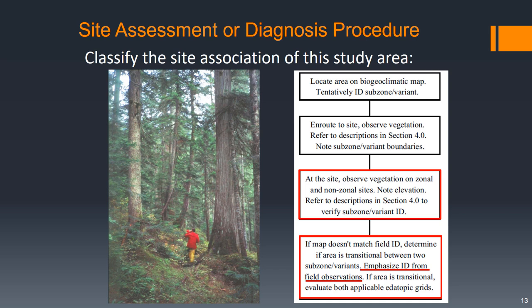If it doesn't match what we're expecting, we should determine if the area is transitional between two subzones or variants, and we should focus on what we're seeing in the field and go by that rather than the map. If the area is transitional — not quite in one or the other — we should use both etatopic grids for our analysis.